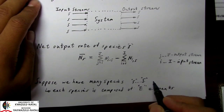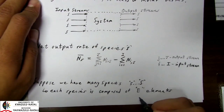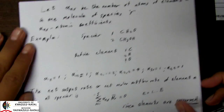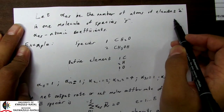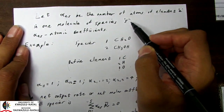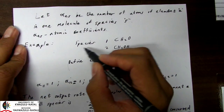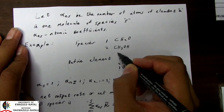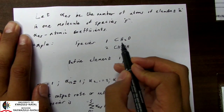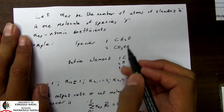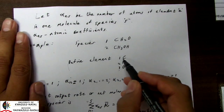Now suppose we have many species of s going to big S, and let's assume that each species is composed of E number of elements — big E. We can define alpha_ES to be the number of atoms of element E in one molecule of species S. Alpha_ES is essentially the atomic coefficients. So let's look at, for example, a stream containing two species: CH2O and CH3OH, which we can number species 1 and 2. Note that we have three different elements in these species — carbon, hydrogen, and oxygen.